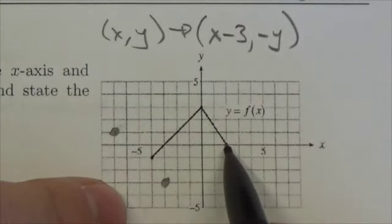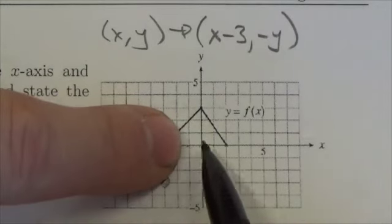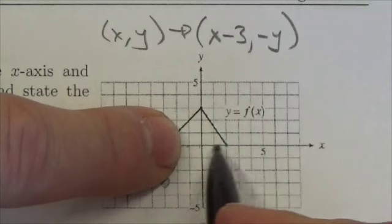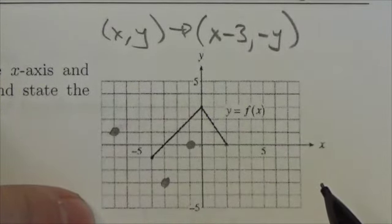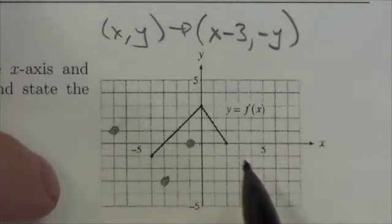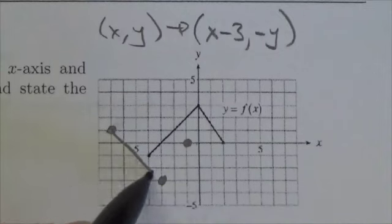This one, again, three to the left—one, two, three. And then I'm gonna flip it, but the y coordinate is zero, so that's actually gonna stay invariant. Vertically it's not gonna change any direction. So now I connect the dots.